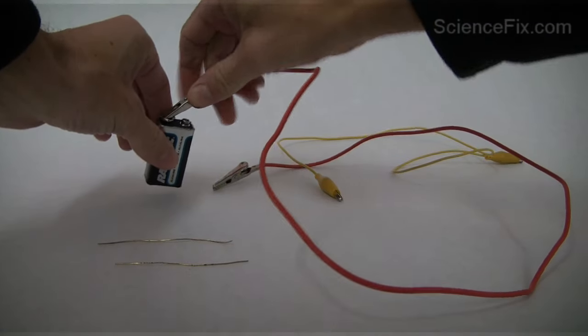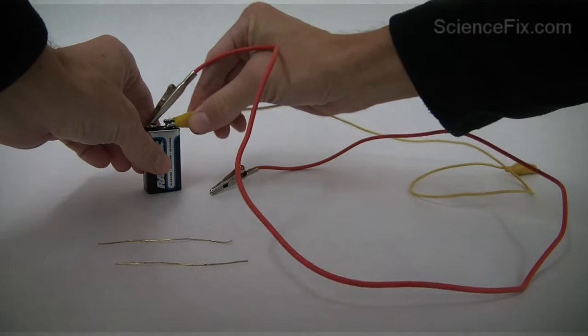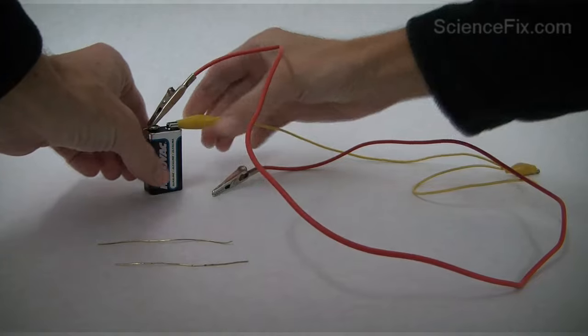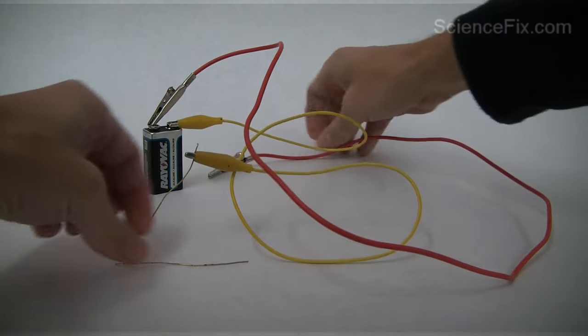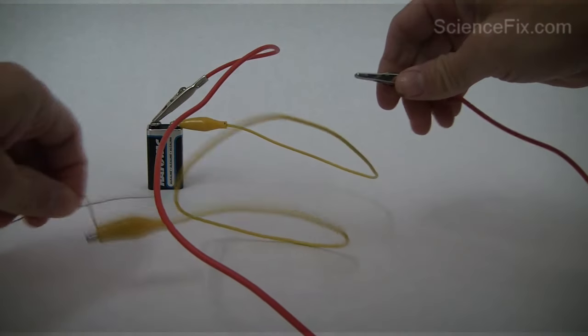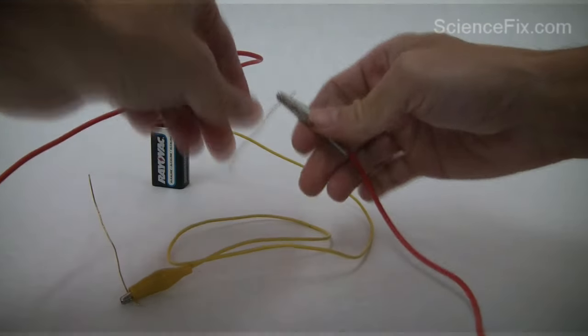Now there's another way you can show water undergoing electrolysis. You can take the same 9-volt battery, hook up two wires to it, and then at the end of the two wires you attach either brass wires or copper wires. I don't think it really matters too much.